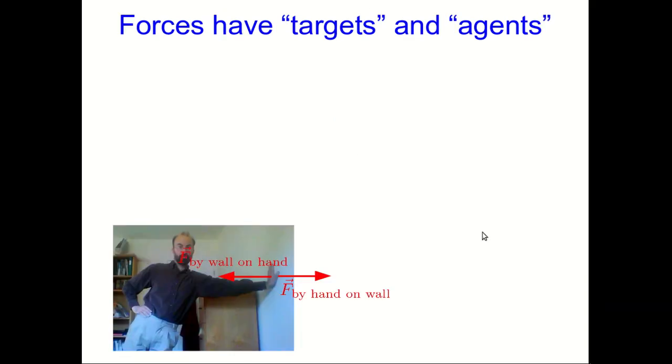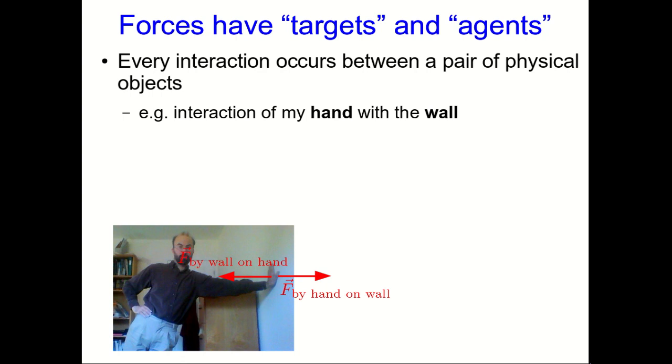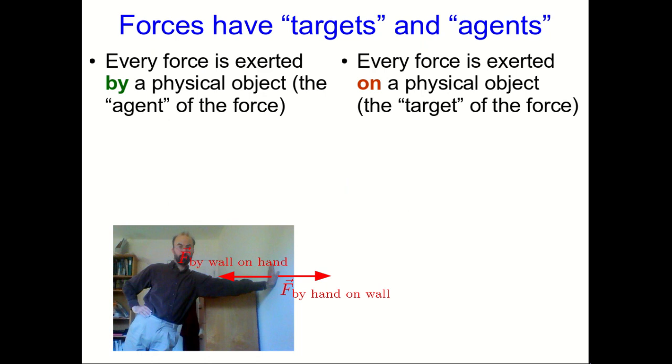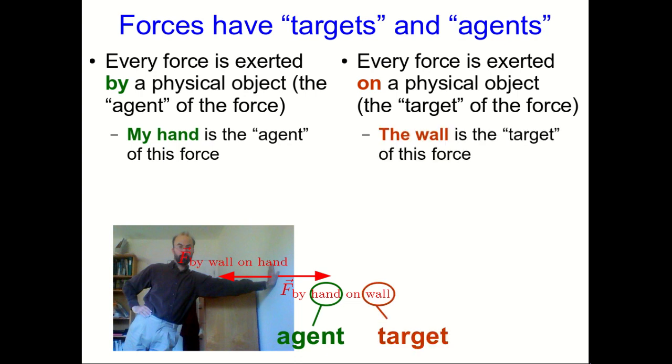There's some language that's useful when talking about these interaction pairs of forces, and it's that forces have targets and agents. Remember, every interaction occurs between a pair of physical objects. So for example, the interaction between my hand and the wall. The wall exerts a force on my hand and my hand exerts a force on the wall. Each force has to be exerted by some physical object, and likewise, every force is exerted on some physical object. So looking at the force by my hand on the wall, we say that my hand is the agent of this force. It's the thing exerting the force. And likewise, the wall is what we would call the target of this force.